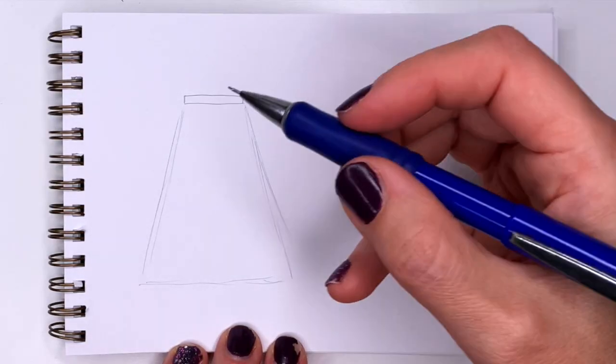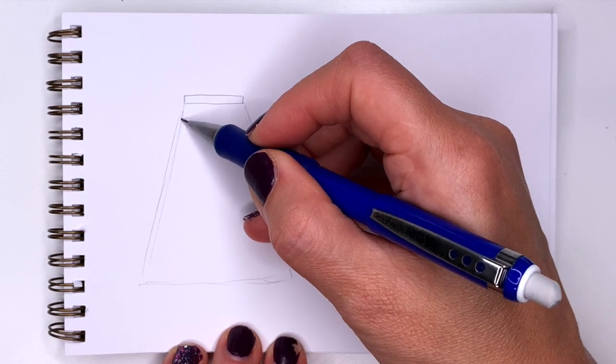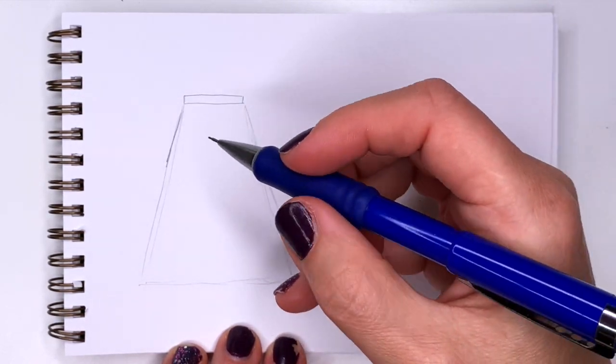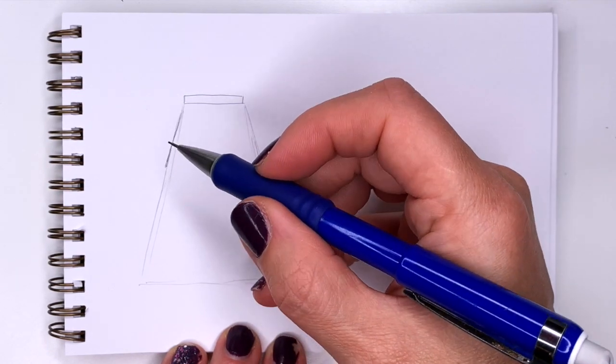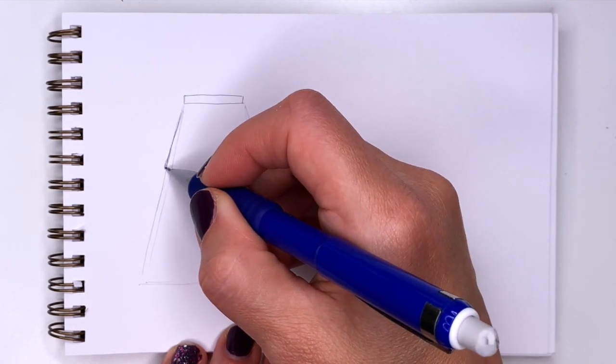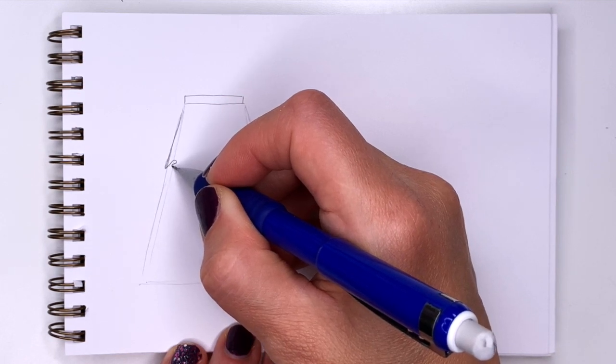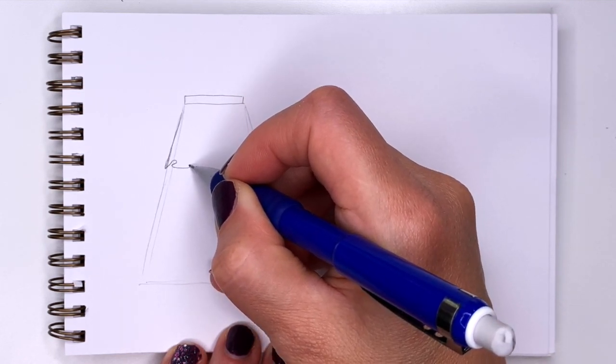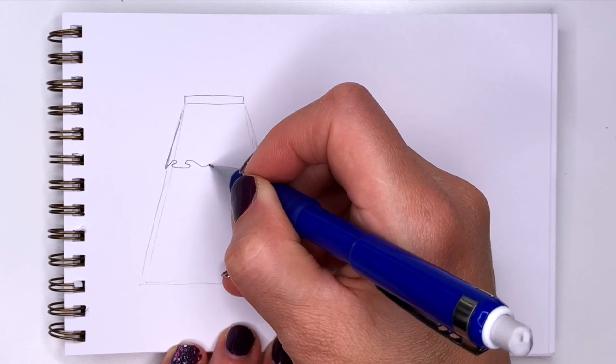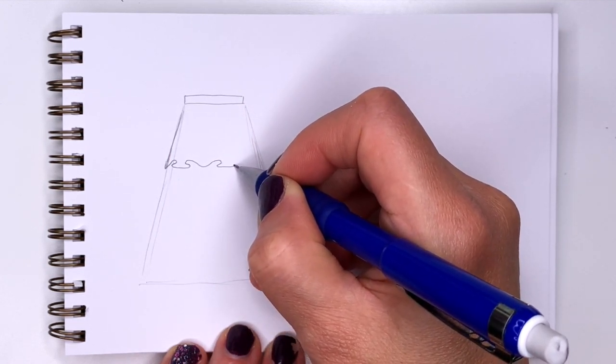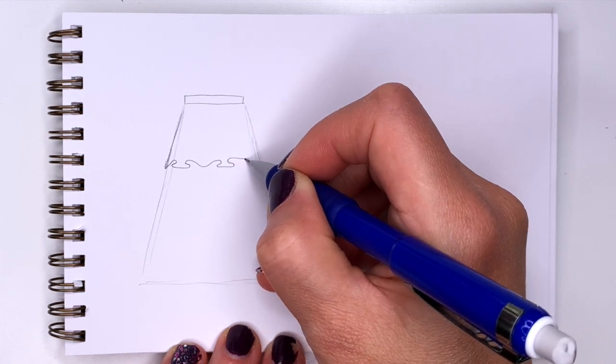Okay so the top layer is going to be right about a third of our skirt and to draw the ruffles I'm going to draw a squiggly line that folds in and out like this. And then I'm going to add details to it to show the ruffles some more.